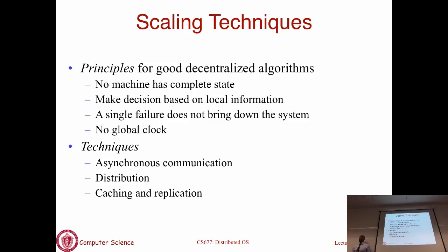On the other hand, you could make the scheduling algorithm randomized - toss a coin, pick node I, and send the job there. That needs no knowledge of the system at all, making a completely random decision. You might say that's bad because it might send a job to a heavily loaded node. The less global knowledge you need, the more efficient your algorithm is in some dimension. In one case you made a completely local randomized decision; in the other you made a decision based on global knowledge.